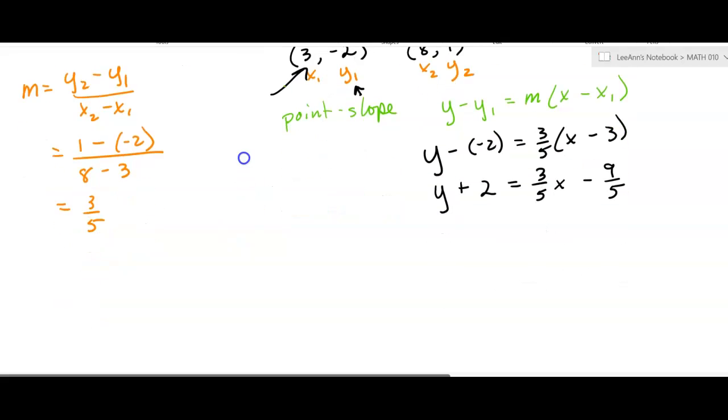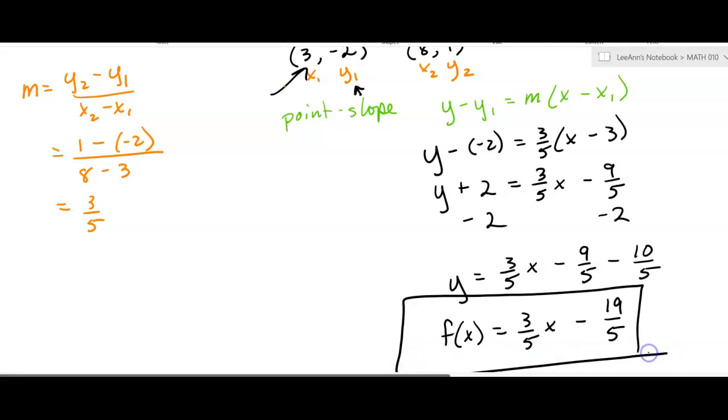So then, we'll have to do a little fraction work here. We're going to subtract 2 from both sides. y equals 3 fifths x. This is going to be a minus 9 fifths minus 10 fifths. You've got to get a common denominator. And so my function is going to be f of x equals 3 fifths x minus 19 fifths.